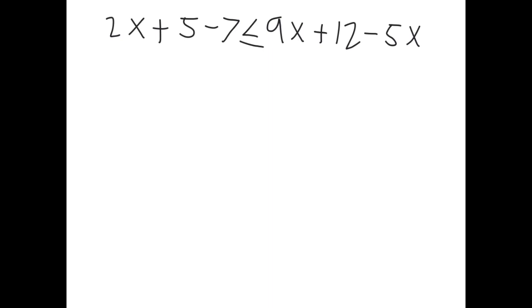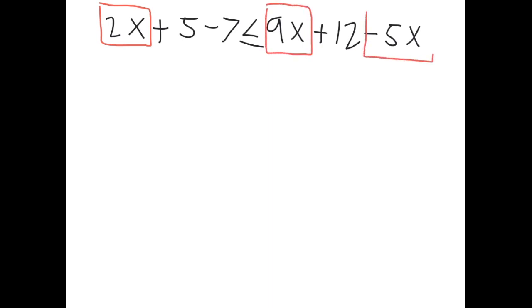The first thing is to combine like terms. If it helps, put boxes around the variables and circles around the numbers, and include the signs too, because those are important.